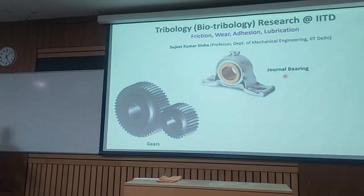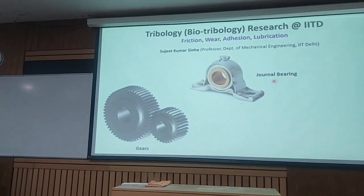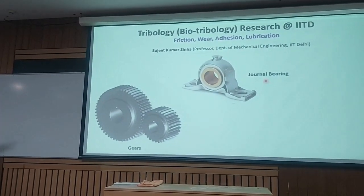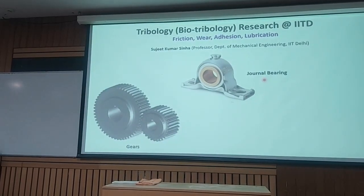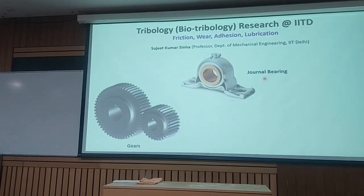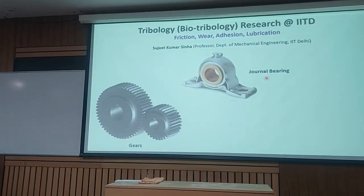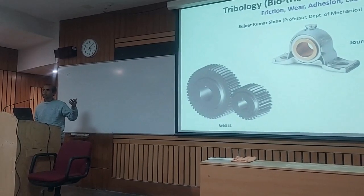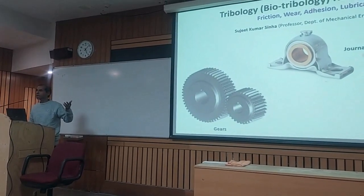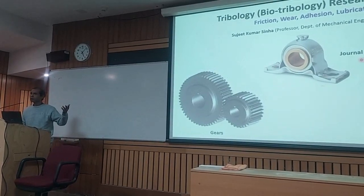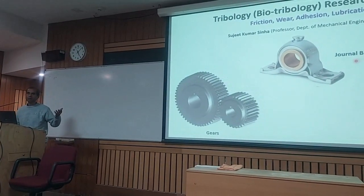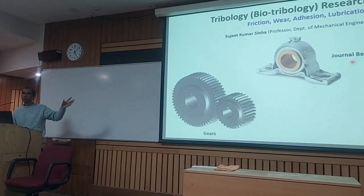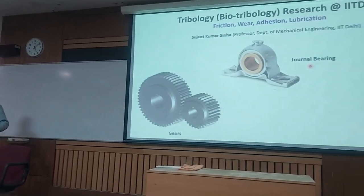Then, bearings. This is an example of journal bearings — there are many places where journal bearings are used. That means there is no ball bearing; it is just the shaft inside the bush, with the shaft rotating and some lubrication. There are many new things coming up in this field: magneto bearings, textured bearings — those kinds of new innovations are coming, and some of our colleagues are studying those.